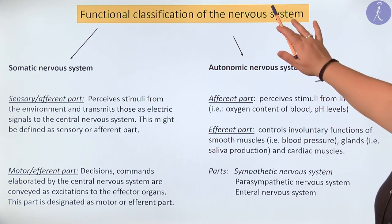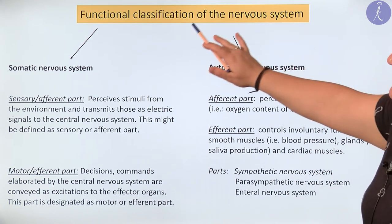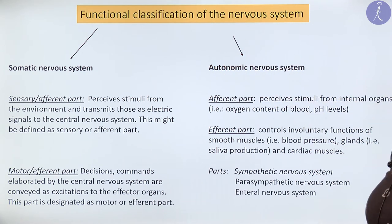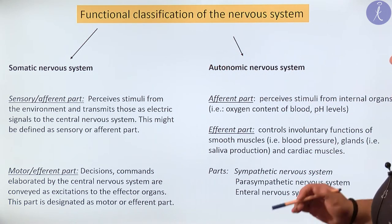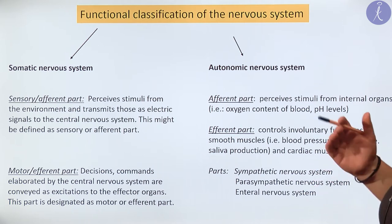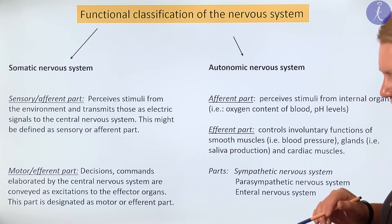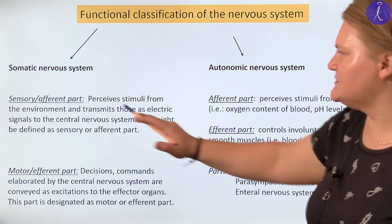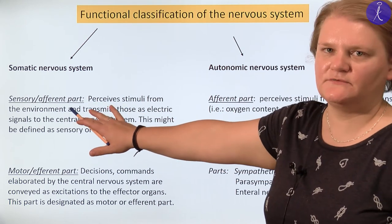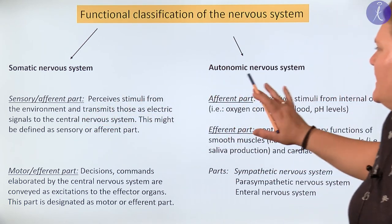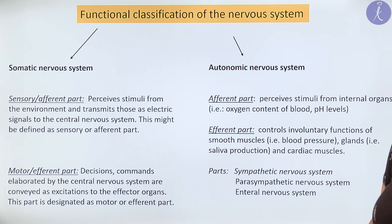The nervous system can also be classified based on function. In that case we can talk about the somatic nervous system and the autonomic nervous system.